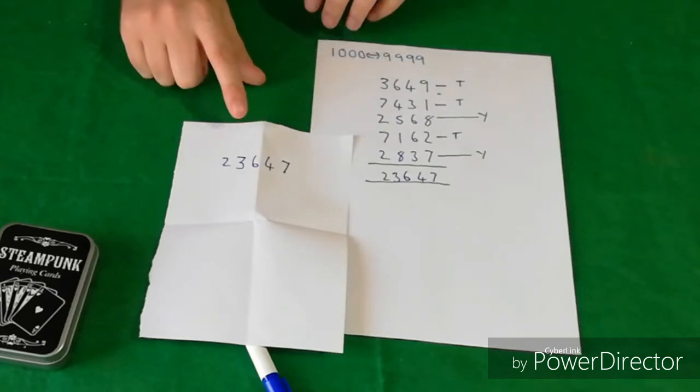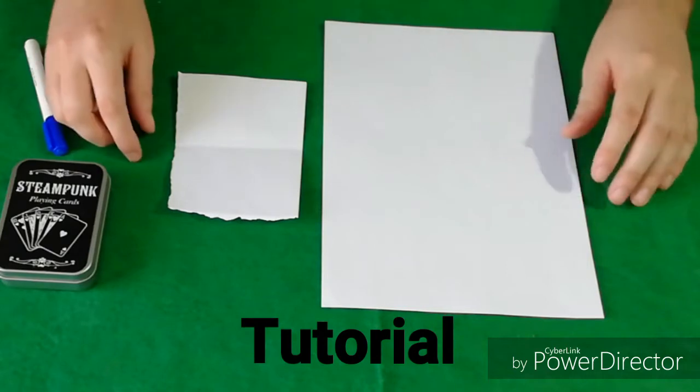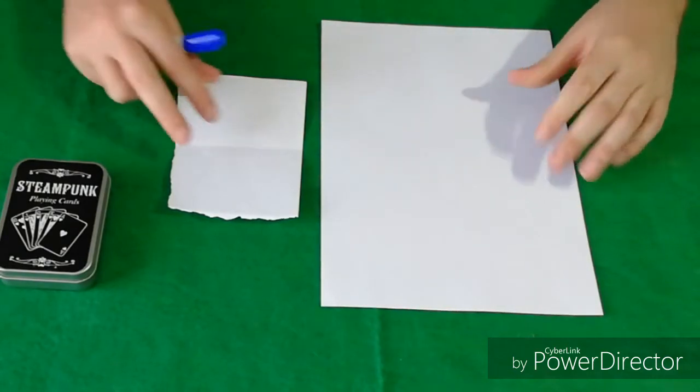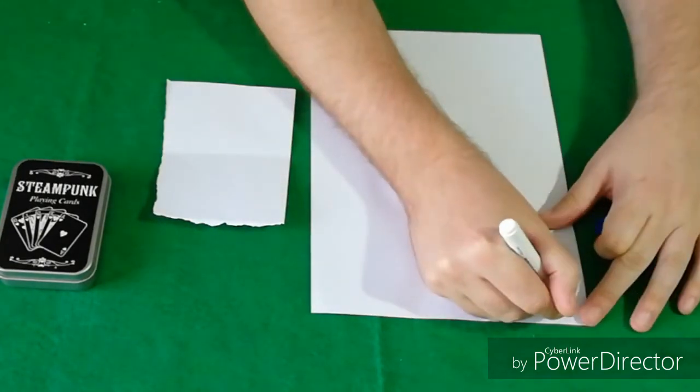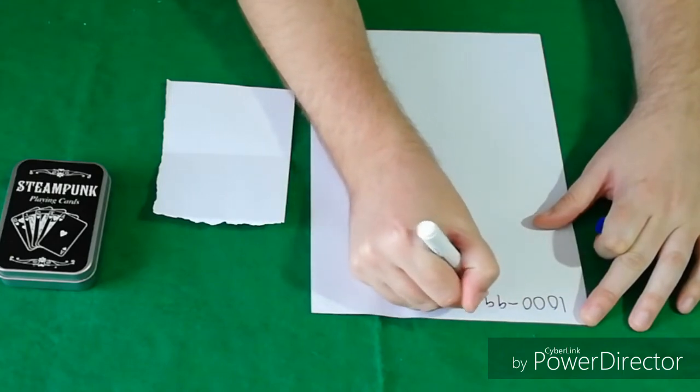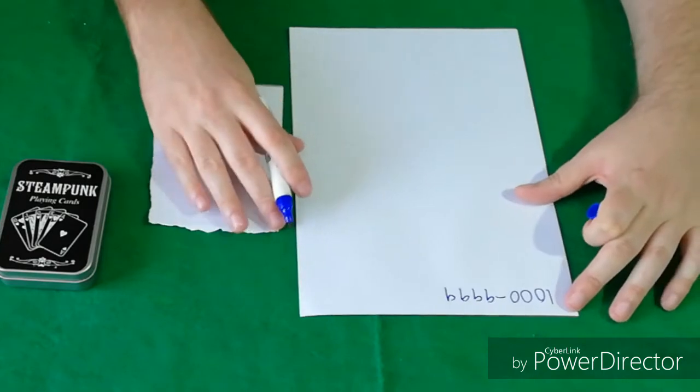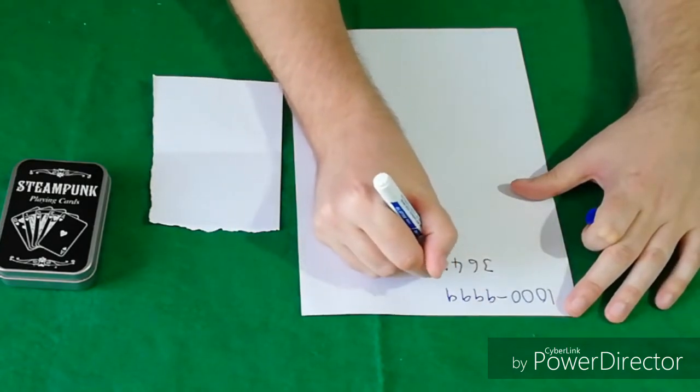So if you want to find out how this is done stick around for the tutorial guys. Okay so welcome back to the tutorial. Okay so this is an amazing effect it always works every single time. What you would do is you would instruct your spectator to write a number between 1000 and 9999. So any number really does not matter. Let's say they go for 3642.